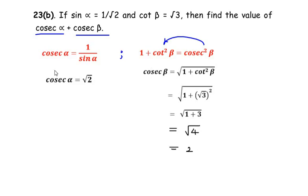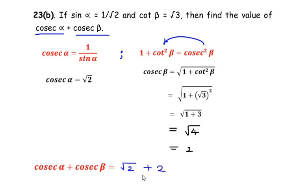Now let us combine these two values. Cosec alpha, that is root 2, plus cosec beta, that is 2. So the value of cosec alpha plus cosec beta is root 2 plus 2.